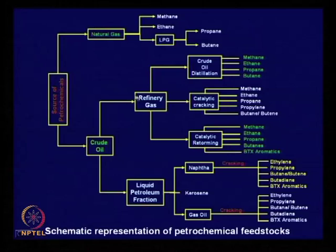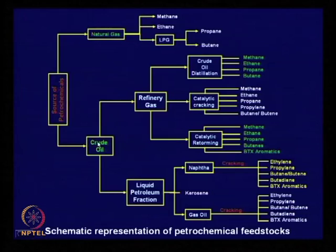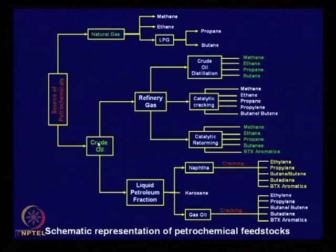From crude oil, we get refinery gas or liquid petroleum fractions. There are two fractions — gas and liquid. From the gas fraction we can get methane, ethane, propane, butane, etc. This crude oil contains basically straight-chain hydrocarbons with carbon atoms ranging from 2–3 up to 10 or 12. From these, all sorts of organic compounds are made by a reforming process known as the cracking process.